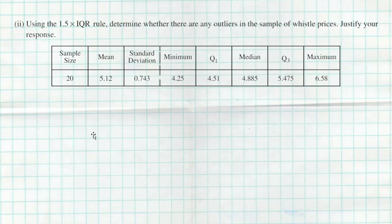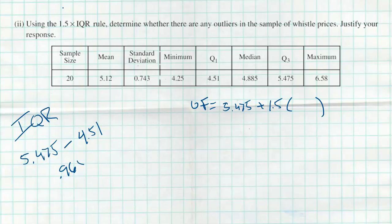Next up, they say use the 1.5 times the IQR rule to determine whether there are any outliers in the sample of whistle prices and justify your response. To determine if there's any outliers, hopefully everybody knows that this is called the fence method. We have an upper fence and the upper fence is going to be taking Q3, 5.475, adding 1.5 times the IQR. We do need to briefly figure out what that IQR is. The IQR is simply going to be taking 5.475, that's Q3, minus Q1, 4.51. That is not very difficult math to do, but grab a calculator because the last thing you want to do is mess up that math and get something wrong. That IQR is 0.965. That's how we're going to find our upper fence. We want to make sure we talk about that anything above that upper fence would be deemed an outlier. We don't have all the data, but we actually can go and look at that dot plot. We also have the max as well.